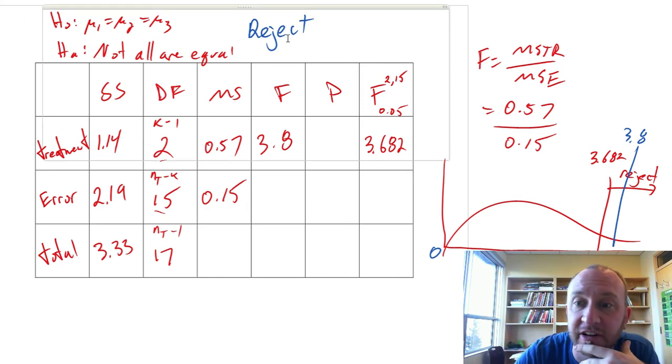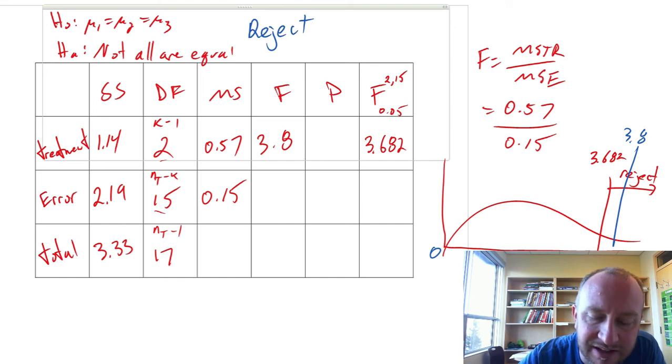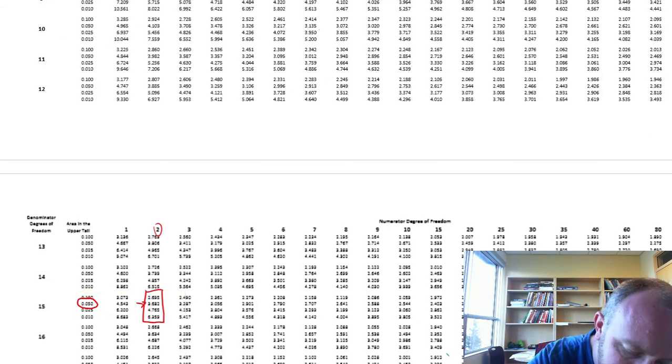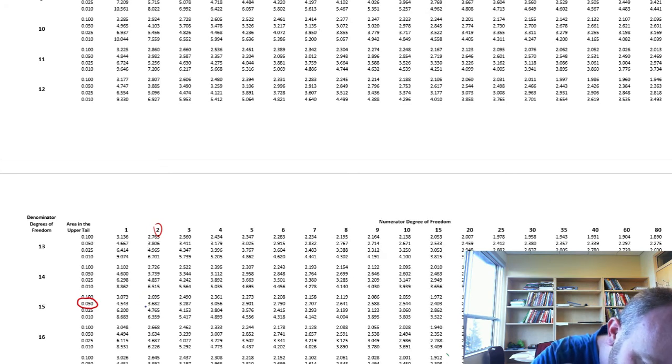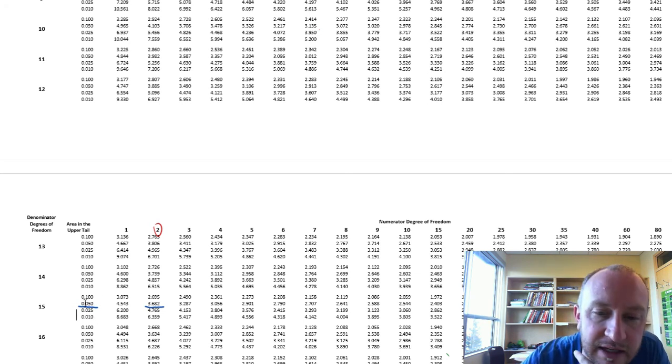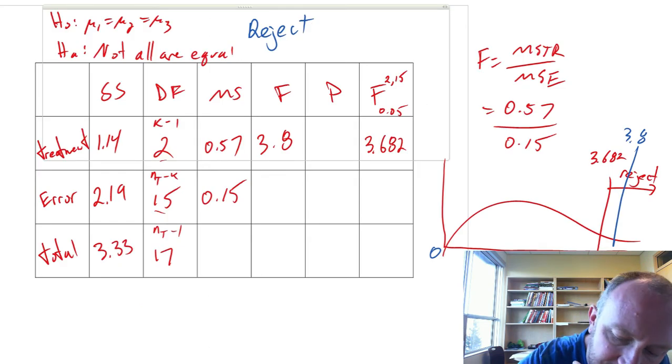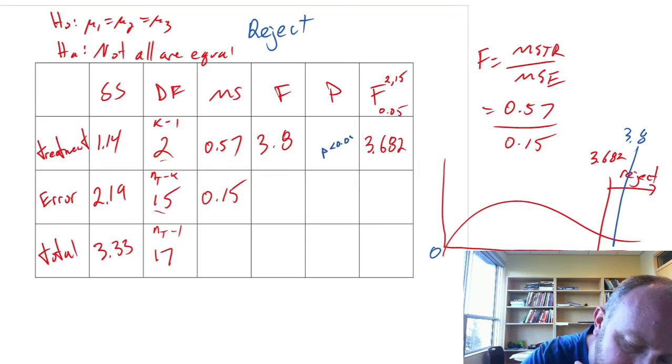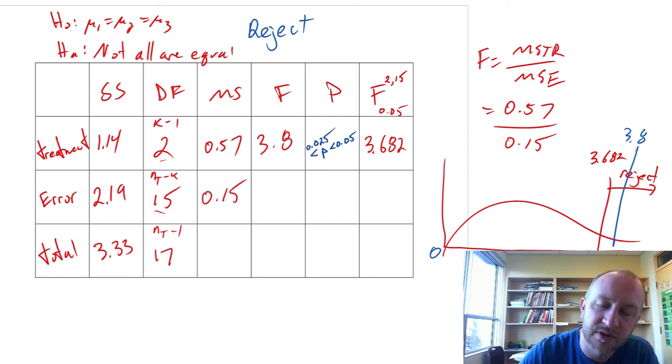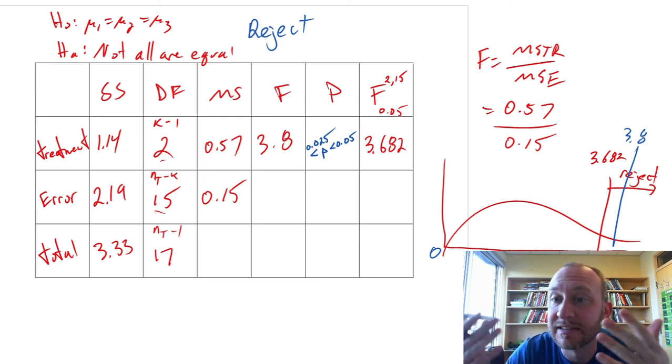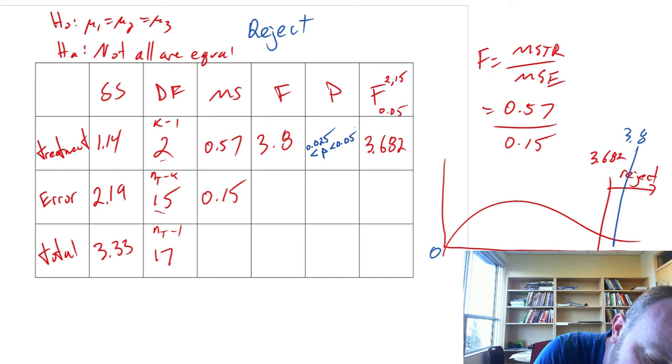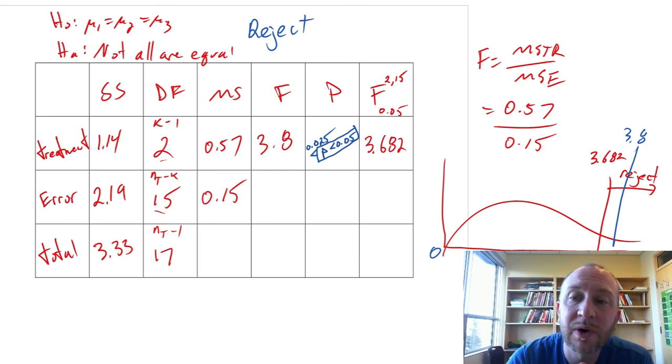Before we get carried away, let's verify that. We'll use the p-value approach. So we want to look for this test statistic of 3.8. And if we look in our block of numbers here, 3.8 is somewhere in between 3.682 and 4.765. So our p-value is somewhere in between 0.025 and 0.05. So our p-value here is something less than 0.05, greater than 0.025. That still gives us the same conclusion here, that the p-value is less than 0.05, it is less than alpha. So that confirms our conclusion to reject this null hypothesis.